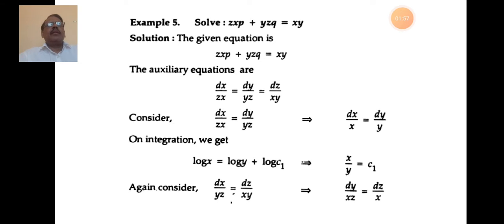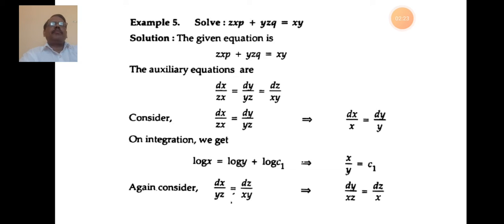Next, solve the equation zx·p + yz·q = xy. Compare with the standard equation: P is zx, Q is yz, R is xy. So the value of P is zx, value of Q is yz, and value of R is xy. Now write the auxiliary equation: dx/P = dy/Q = dz/R.